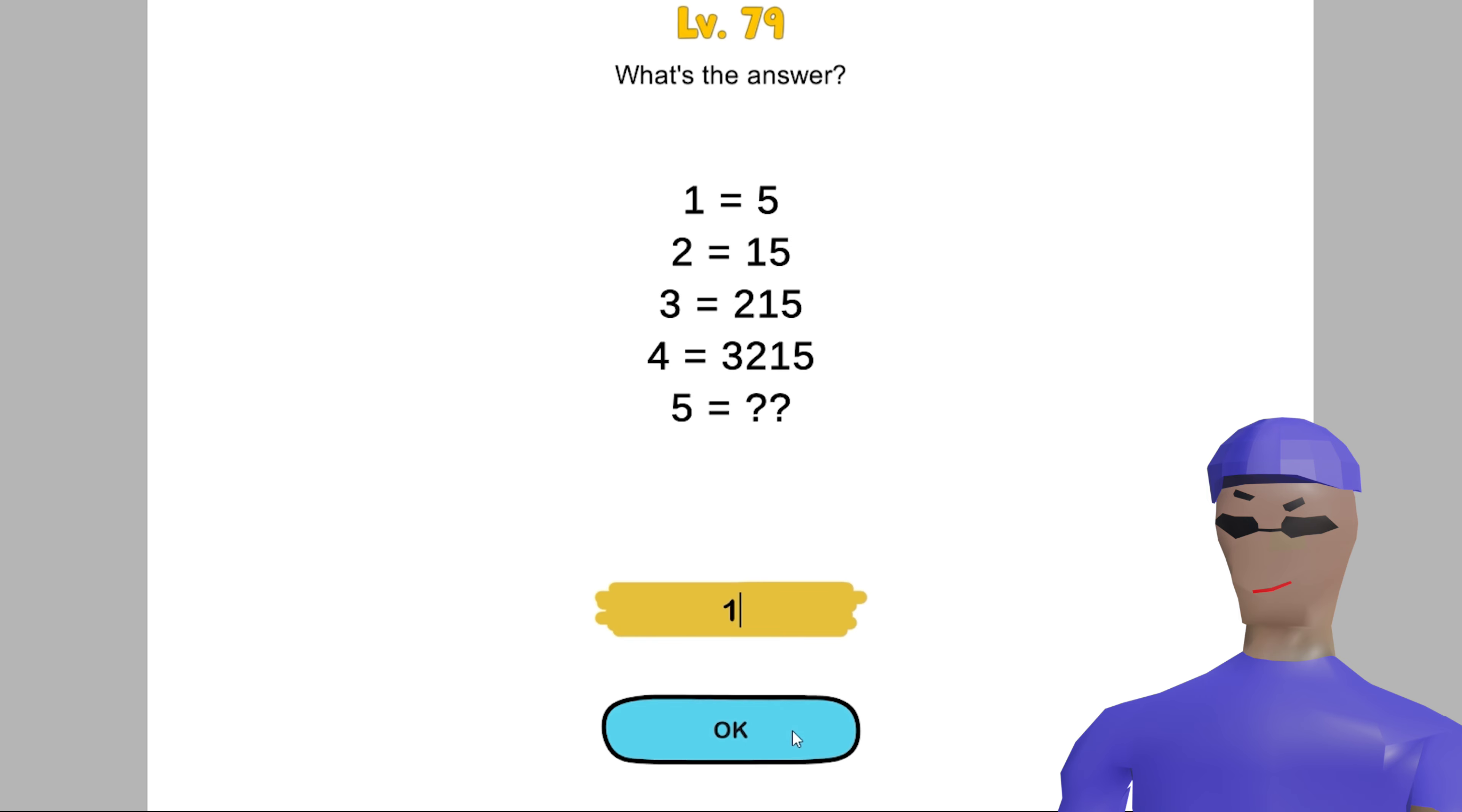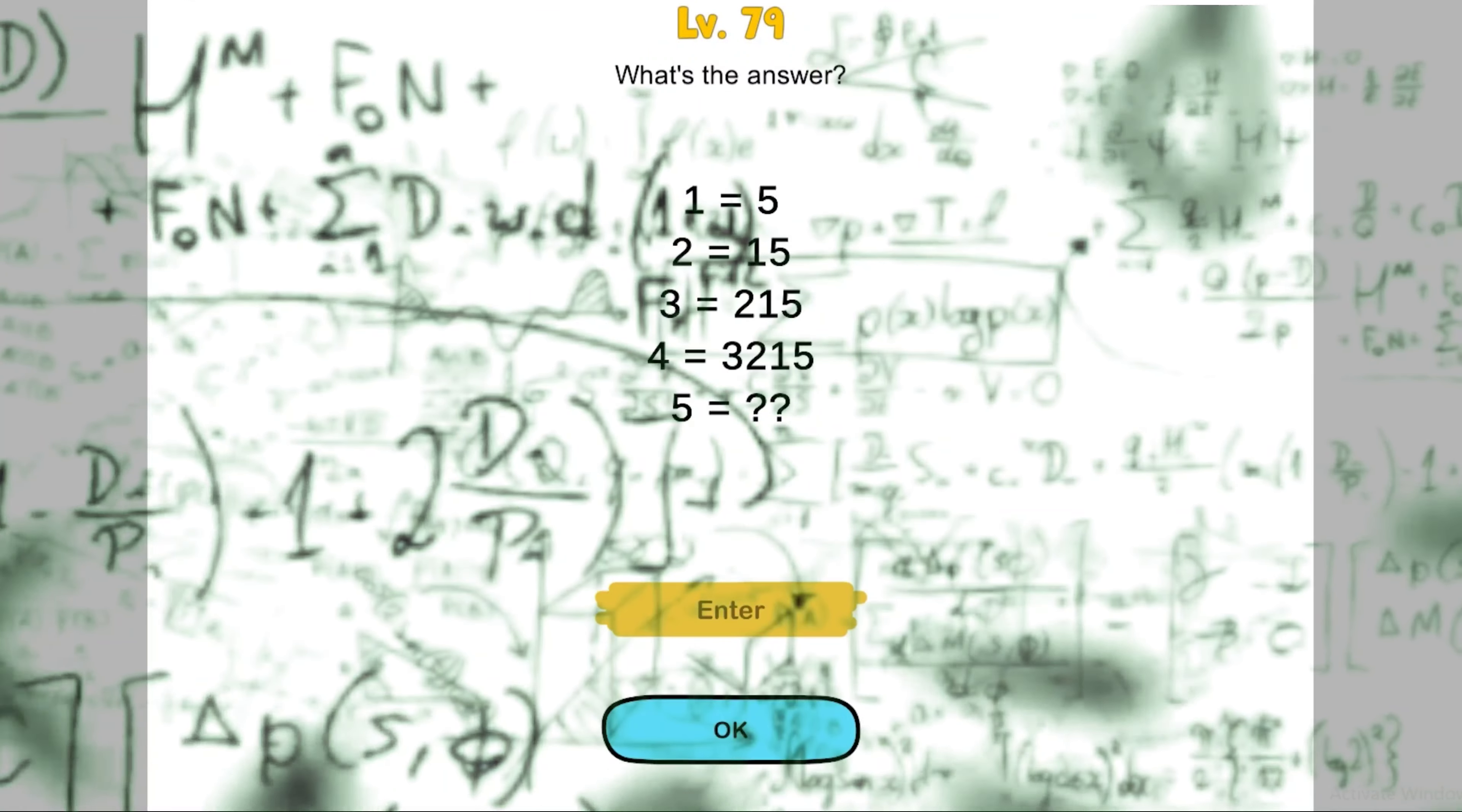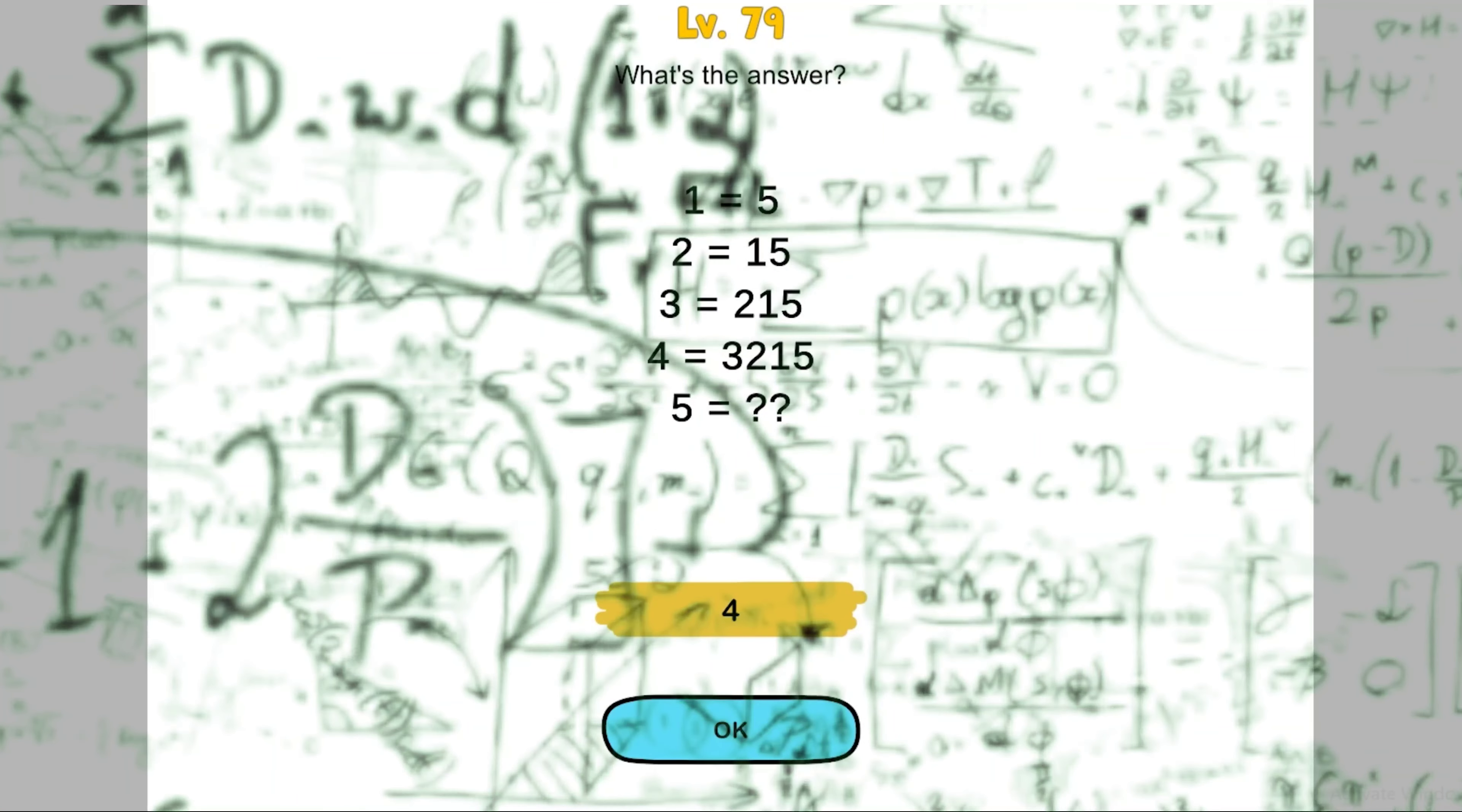Obviously 1. You suck! 1 equals 5, it means 5 should be equal to 1. So it means I have to use some other way. 5, 5, 5, 5, 1, 1, 1, 2, 2, 2, 3, 3, 4, 3, 2, 1, 5.